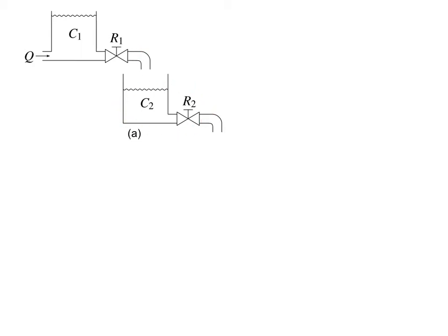If you notice, the fluid that flows out of the first subsystem flows into the second subsystem, but the spout at the outlet of the first subsystem is not submerged into the second subsystem. Hence, the pressure in the second subsystem does not influence the flow out of the first subsystem, but the flow out of the first subsystem does influence the second subsystem. So there is only an influence of the first system on the second, but not the second on the first.